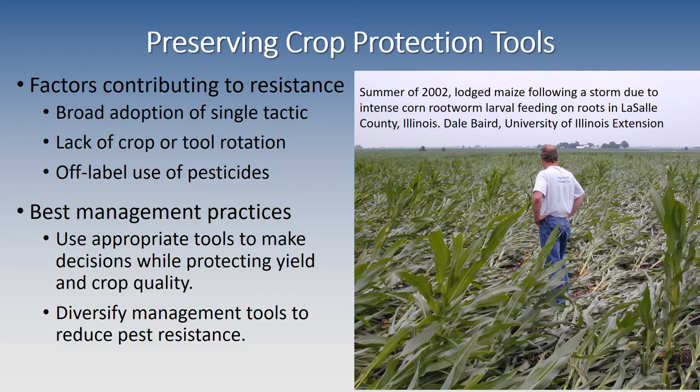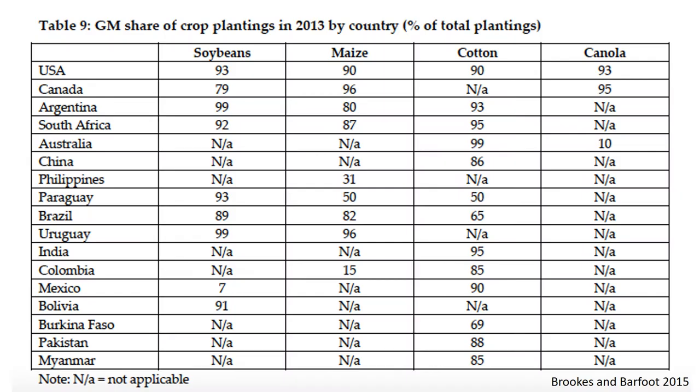A lack of crop or tool rotation, and off-label use of pesticides, can also be contributors to resistance in pest populations. So we recommend best management practices, which include the appropriate use of tools to make decisions while protecting yield and crop quality, and diversifying management tools to reduce the likelihood of pest resistance.